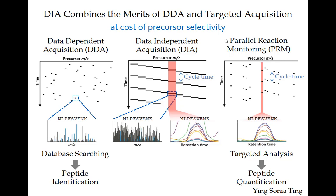What would people say is the primarily unique thing about DIA in this figure, just looking at the very simplest differences? What's the main difference? It covers everything. That's where a lot of the interest comes from — the fact that it's comprehensive.